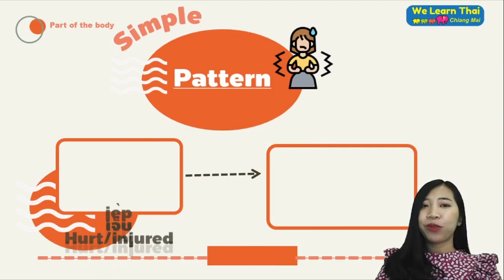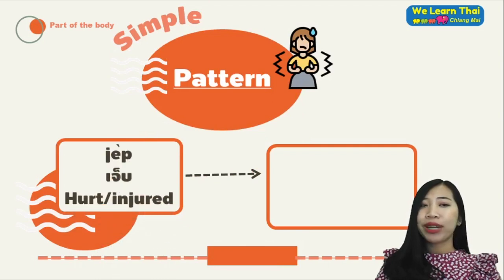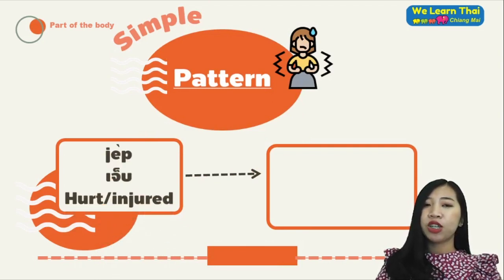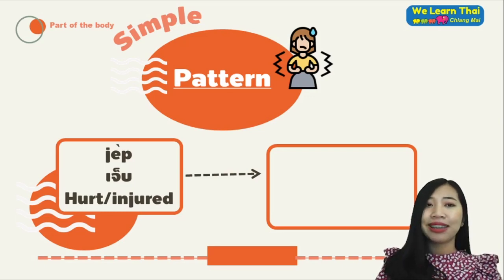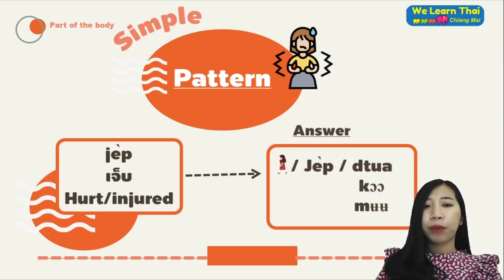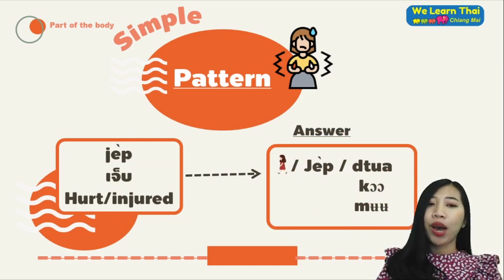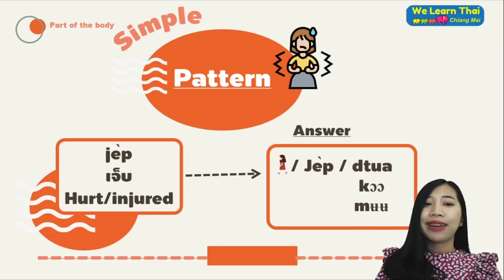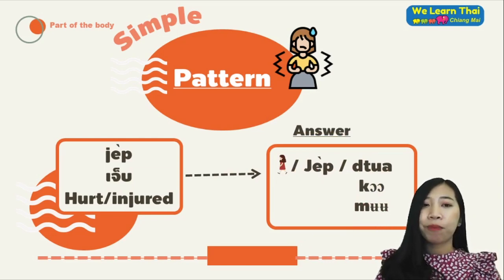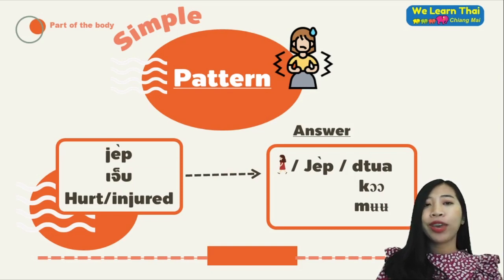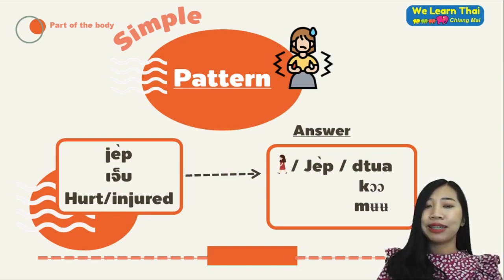Next, we have the word เจ็บ. The word เจ็บ means to be hurt or injured — pain inside the skin that you cannot see too. For example: ดีฉันเจ็บตัว (my body hurts), ดีฉันเจ็บขอ (my arm hurts), or ดีฉันเจ็บมือ (my hand hurts).